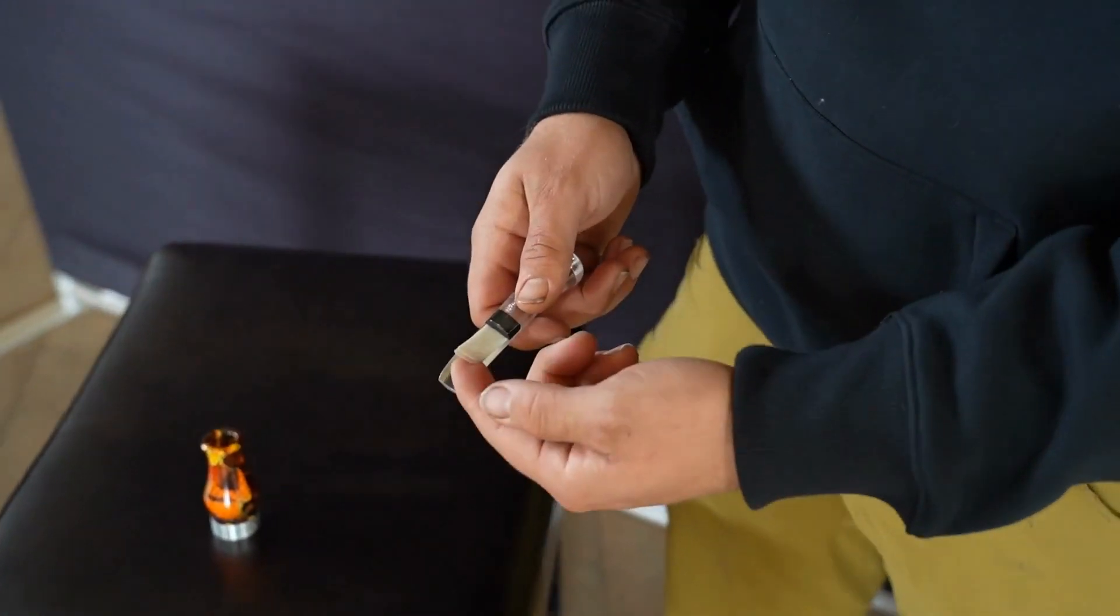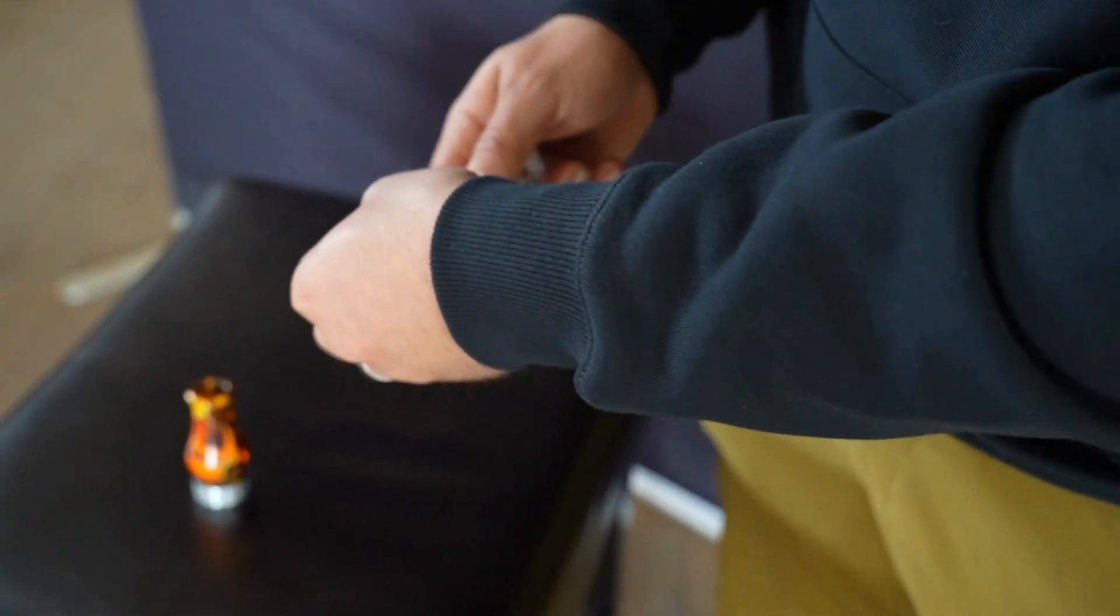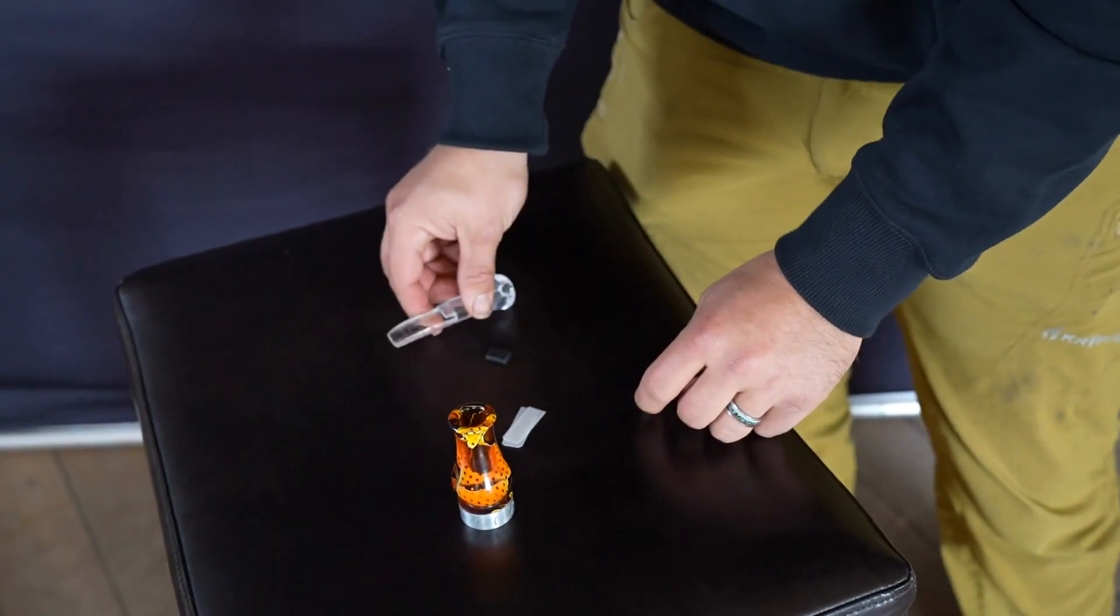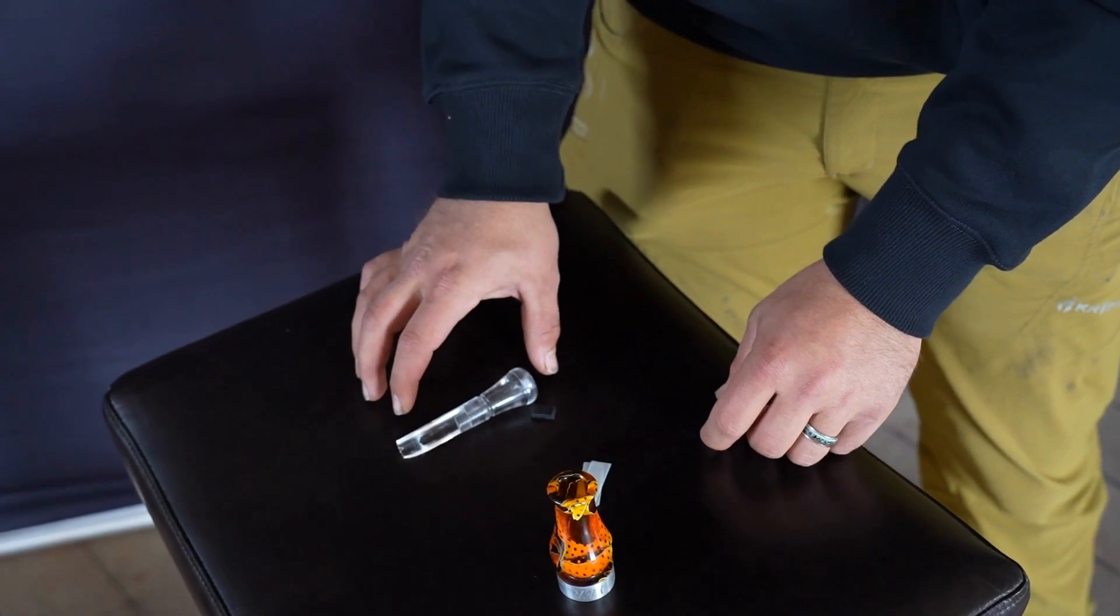Obviously you're going to take your barrel off. You'll have two reeds in here. Just grab the reeds by the bottom. Don't bend them up. Pull them straight out. Then your wedge will come out with them. Set all that down.